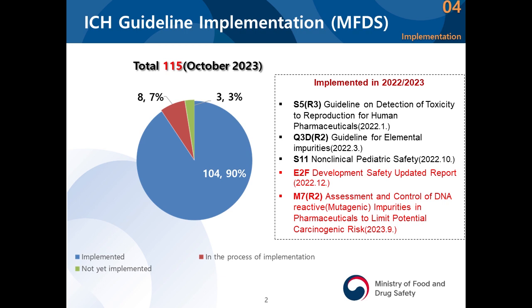As of now, in 2022 and 2023, about five guidelines have been newly implemented in the past year and this year. At this very same training last year, we shared that implementation had gone up to S11. Since then, E2F and M7 — assessment and control of DNA reactive impurities — have also been updated and implemented.